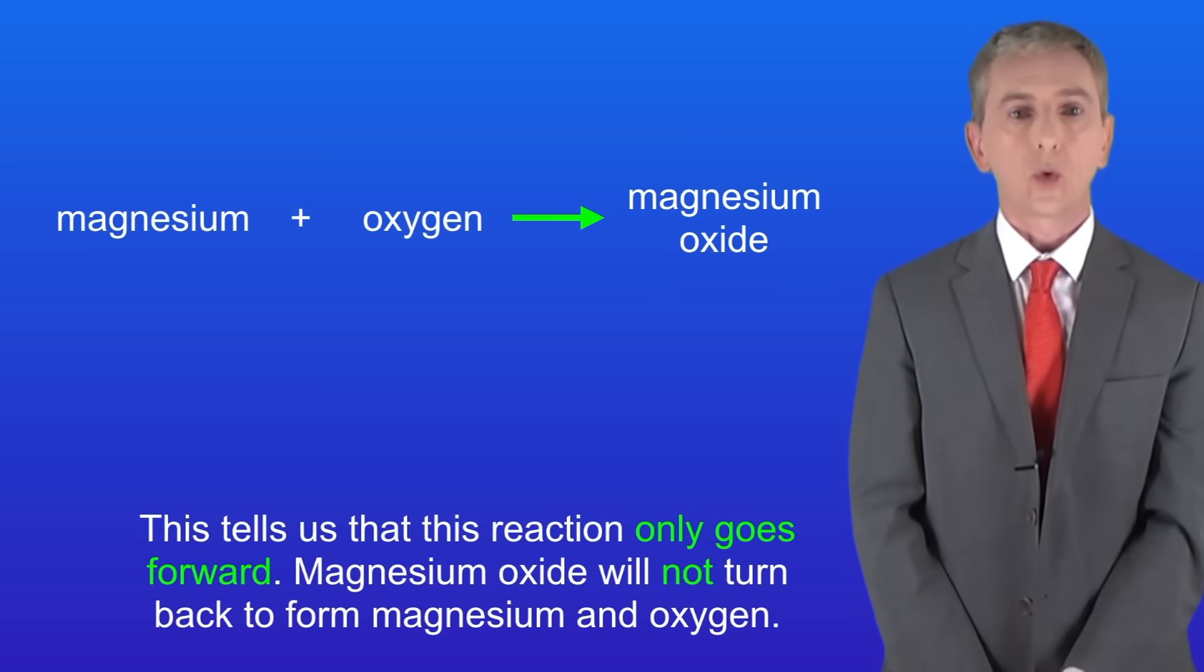This tells us that this reaction only goes forward. In other words magnesium oxide will not turn back to form magnesium and oxygen and in fact most of the reactions that you see in GCSE chemistry will look just like this one.